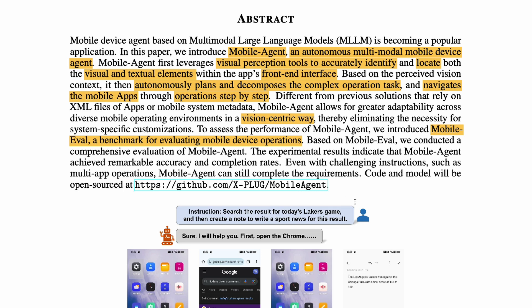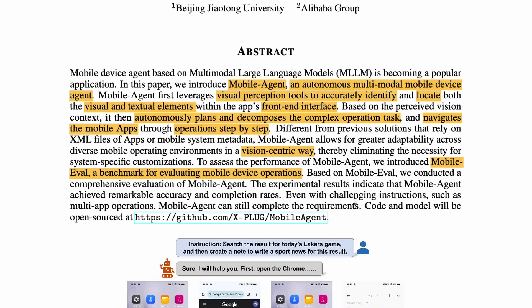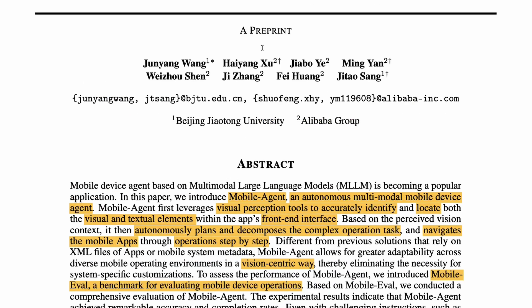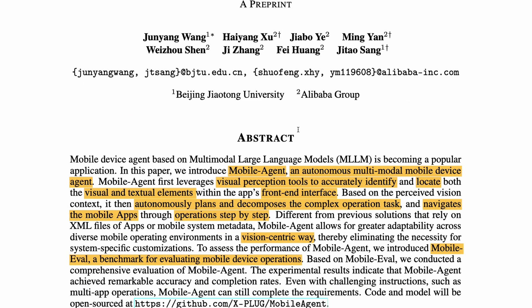Rather than going into the implementation, a couple of demos will be highlighted. To clarify, this is not a separate new model — it is an agent built on top of GPT-4 Vision with certain tools. This is from Alibaba Group, Beijing, and Ziotang University. It is a mobile agent that can operate your mobile system with certain visual perception tools.